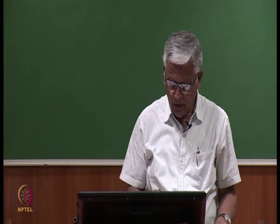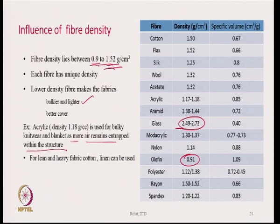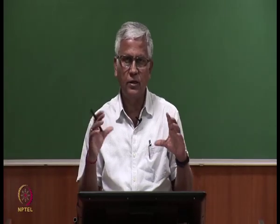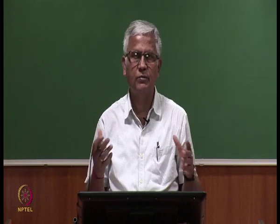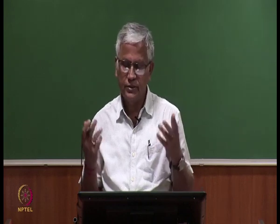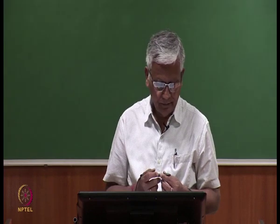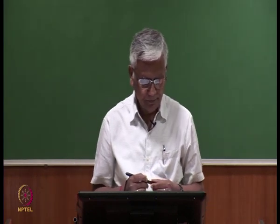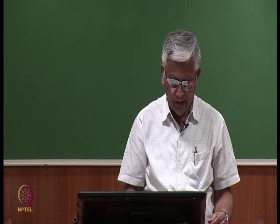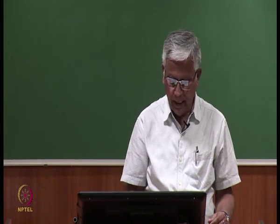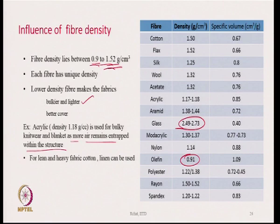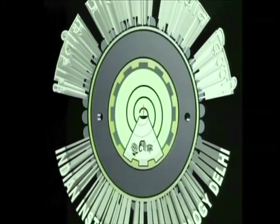Acrylic is used for bulky knitwear and blankets because more air remains trapped within the structure and acrylic is very low density — making pullovers that look bulky but are very light. For lean and heavy fabric, cotton or linen can be used.